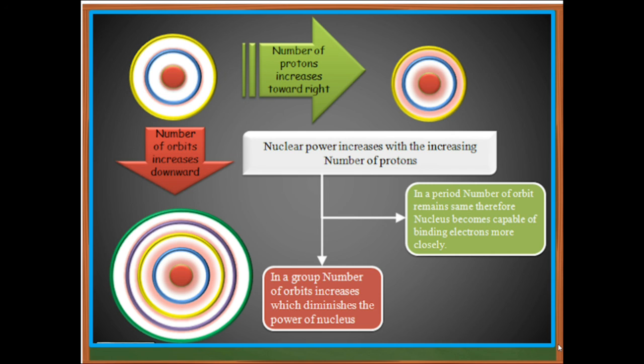Therefore, electronegativity value increases as you move from left to right in a period. In a group, the number of orbits increases which decreases the power of the nucleus. Therefore, electronegativity value decreases as you move from top to bottom.